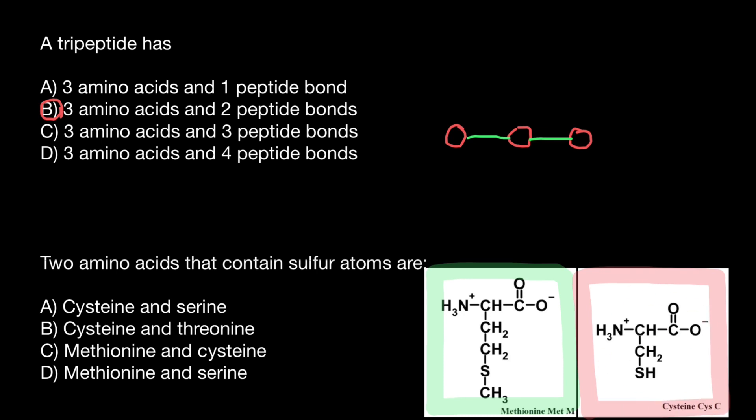Cysteine is not essential because we can produce this amino acid if we get methionine with our food. So the answer to the question two amino acids that contain sulfur atoms are answer C. This is going to be methionine and cysteine.